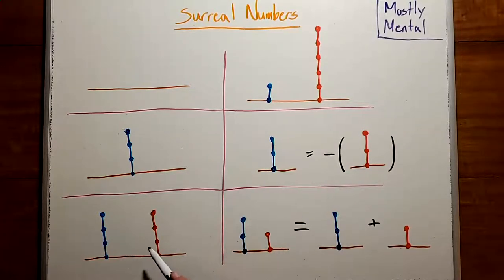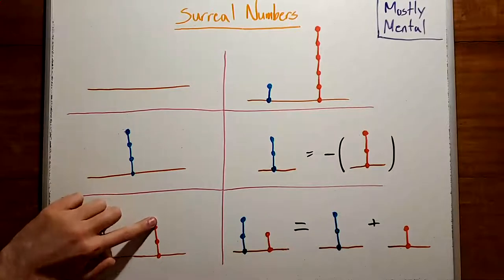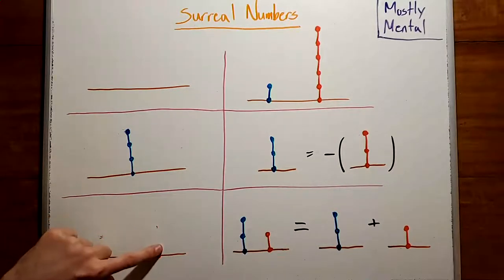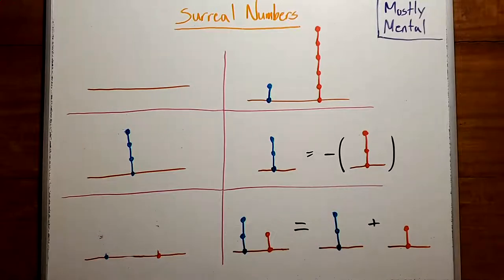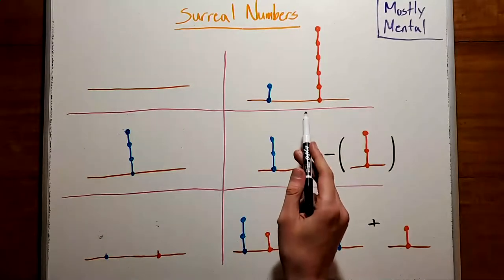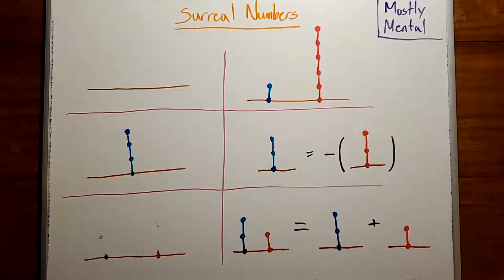Okay, now what happens if both players have edges? If they have the same number, then whatever the first player does, the second player can mirror it. And repeating until we run out of edges, the second player wins. On the other hand, if one player has more, it doesn't really matter who goes first. The player with more edges wins.